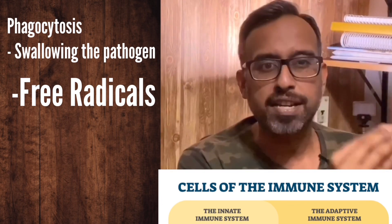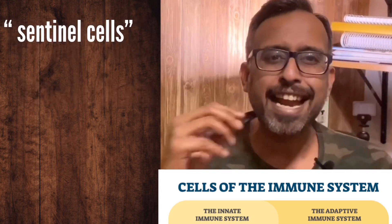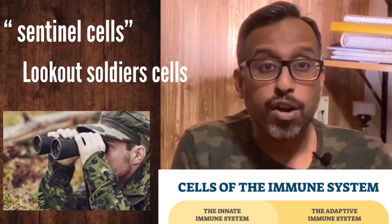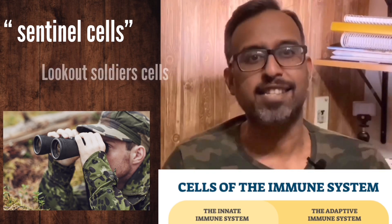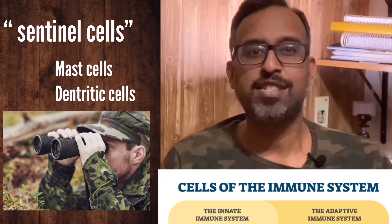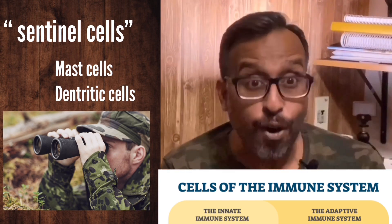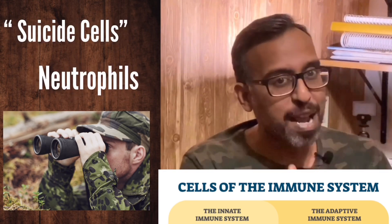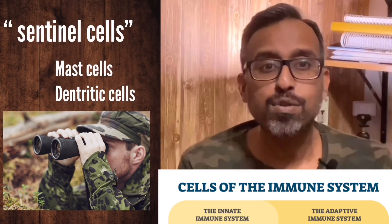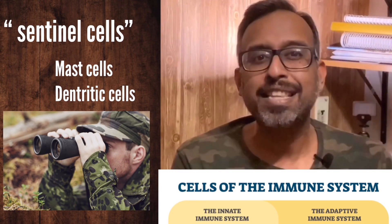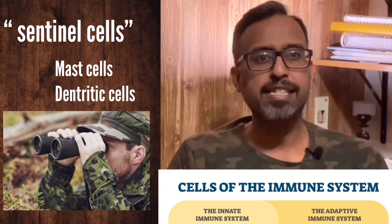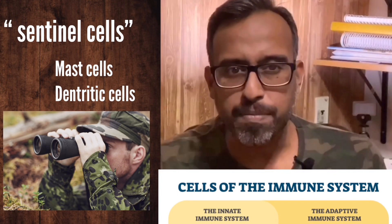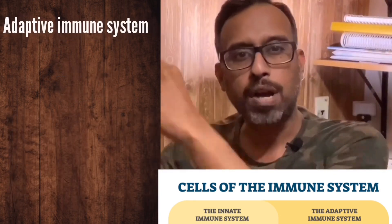Then there are sentinel cells — like someone who stands on a tower and watches. These cells are called mast cells or dendritic cells. They are produced in the first 48 hours alongside the suicide cells, which are known as neutrophils. The sentinel cells have a longer life. They sit and watch, recognize the pathogen, and then go communicate that information to the cells of the adaptive immune system.